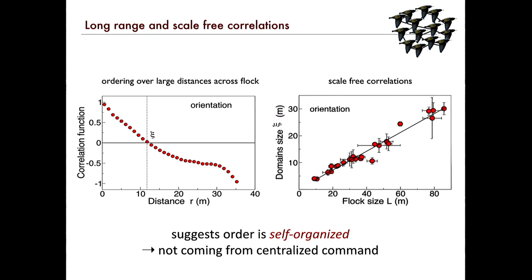What that means is that there seem to be scale-free correlations — meaning there's no characteristic scale to these correlations. It's not like you have a scale of ten meters or a hundred meters or one meter. There's no right scale. Scale-free means the order is self-organized; it doesn't come from some external factor which sets the right length scale, but actually comes from the behavior of the flock itself.